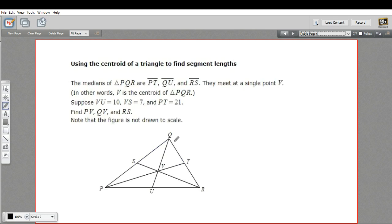Here we have a diagram and these are the medians. They're telling us that these segments are the medians, and they meet at V. So V is the centroid. Let's mark down the information we know already. It says VU equals 10, so this is 10, and VS is 7.